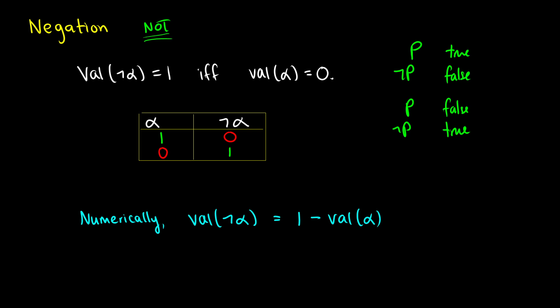We can think about this numerically, which is why I use numbers. We can say that the value of not-alpha is equal to 1 minus the value of alpha. So let's say alpha is true — the value of not-alpha is 1 minus 1, which gives us 0. So if the value of alpha is 1, then the value of not-alpha is 0, which is exactly what we found in our truth table in the first row. And if you do this with alpha being false at 0, you get 1 minus 0, which is 1 — meaning if alpha is false, then not-alpha is true.